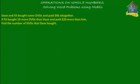Dave and Ellie bought some DVDs and paid $96 altogether. If Ellie bought 10 more DVDs than Dave and paid $20 more than him, find the number of DVDs that Dave bought.